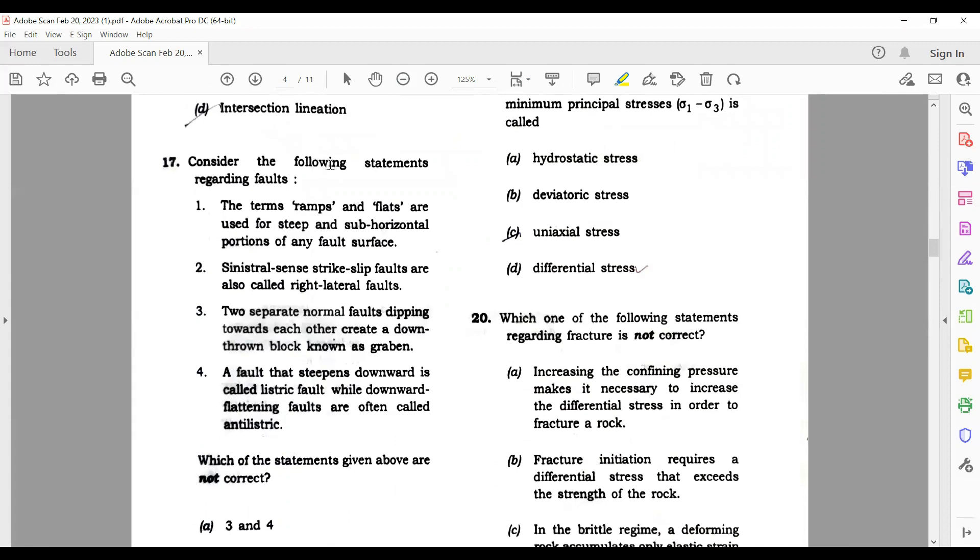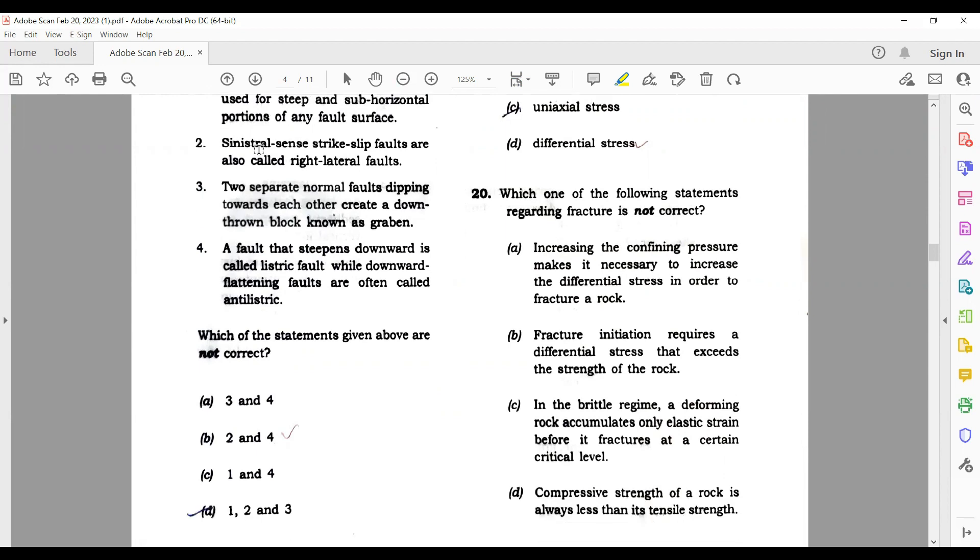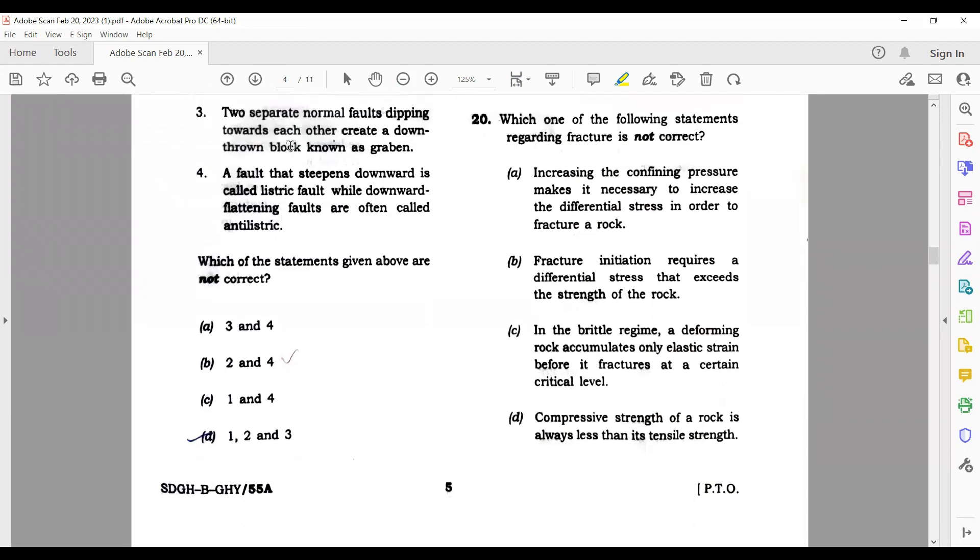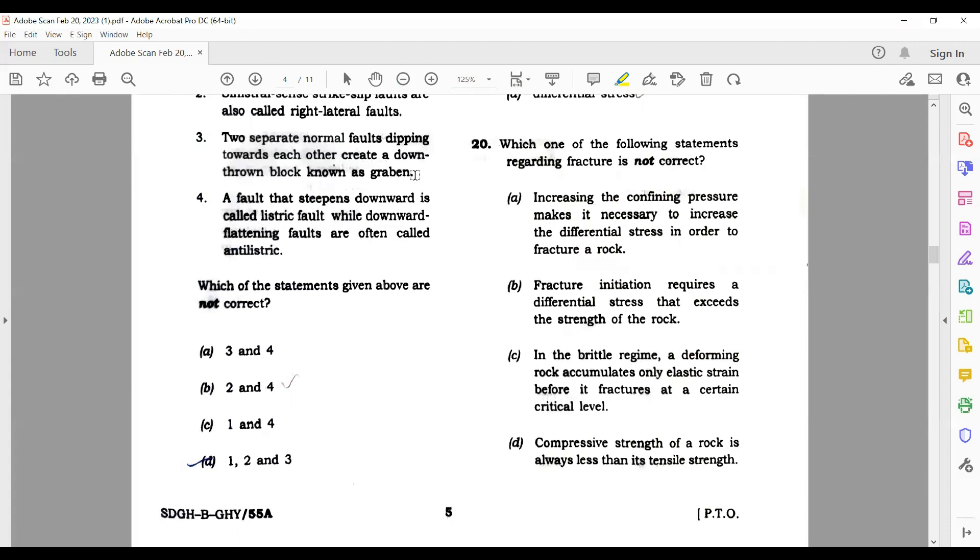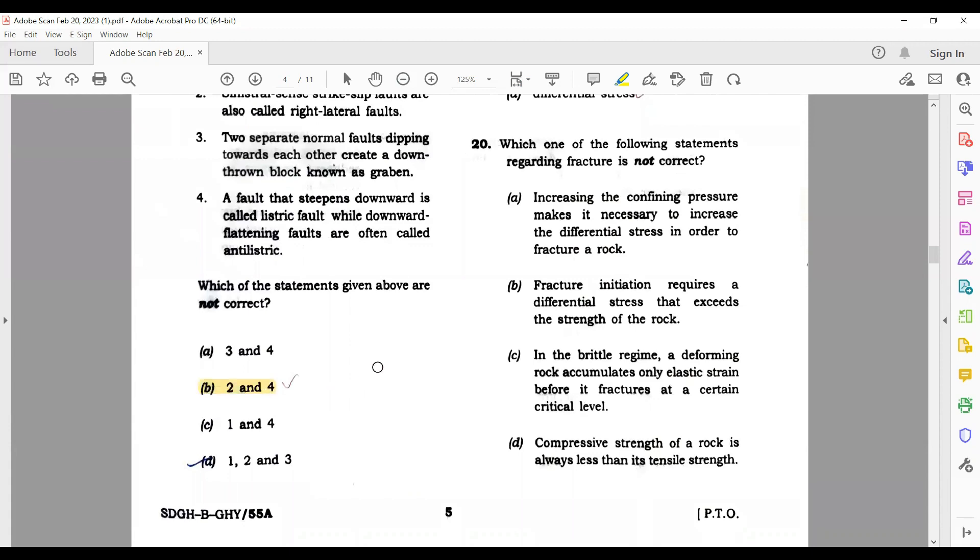Consider the following statements regarding folds. Let's read them. The terms ramps and flats are used for steep and sub-horizontal? No, this is wrong. Sinistral sense shear zones are called right lateral? This is right. Two separate normal folds dipping towards each other create a graben structure? No, they do not create a graben structure. This is wrong. A fault that steepens downward is called listric fault while downward flattening faults are called anti-listric. This is correct. So we have found two correct options - two and four. So option B is your correct answer.